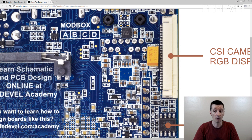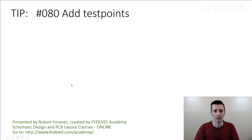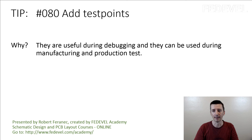And that's it — that's all about test points. Tip number 80: add test points. They are useful during debugging and they can be used during manufacturing and production test.